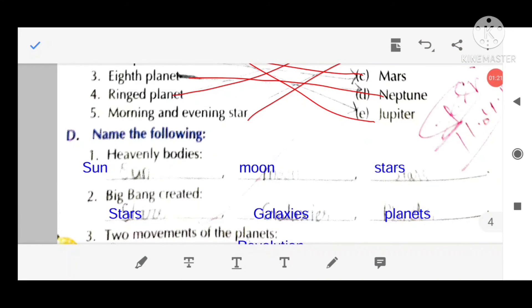Name the following. Heavenly bodies: Sun, Moon, stars. Big bang created: Stars, galaxies, planets.